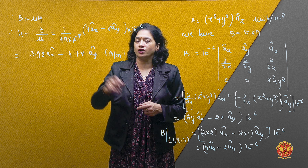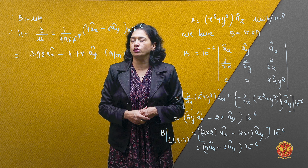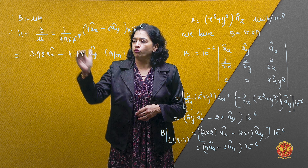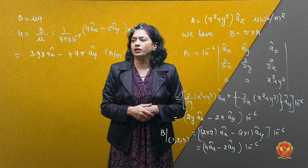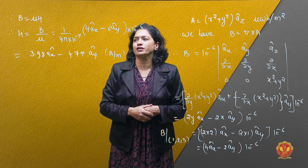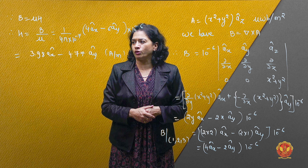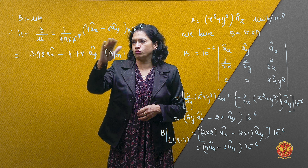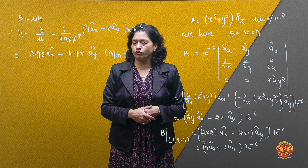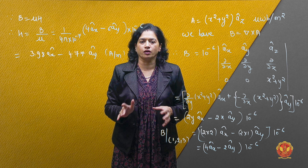Ab hume H find karna hai. B = μH hume pata hai, so H = B / μ. Free space mein μ = 4π × 10⁻⁷. B ka expression (4 ax minus 2 ay) × 10⁻⁶ hai. To solve kiya to poora expression H ka 3.98 ax minus 4.77 ay amperes per meter aata hai.